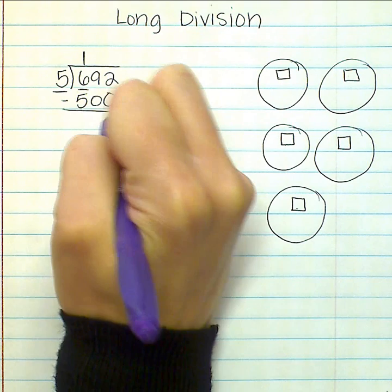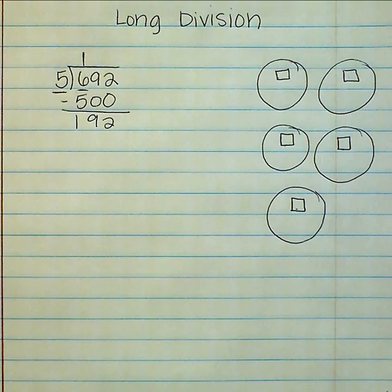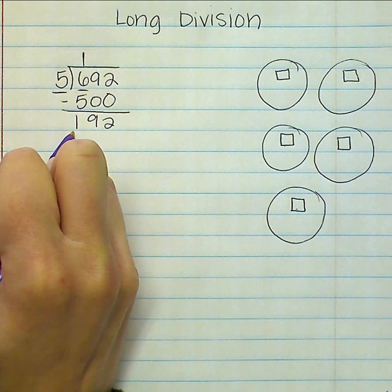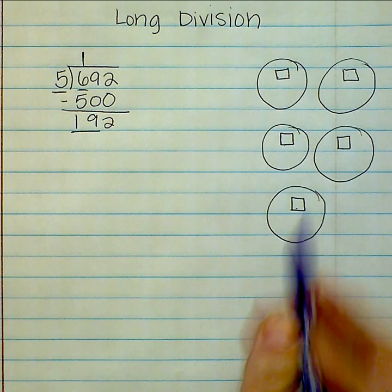Then you subtract to see how many you have left. Since I already did hundreds, I have to regroup this one hundred into ten tens. So I have nineteen tens to divide evenly among these groups.